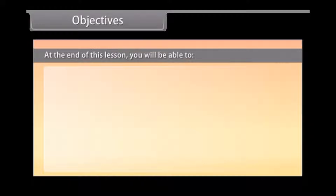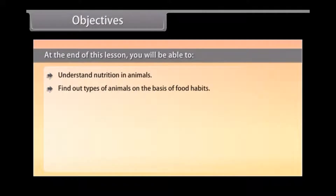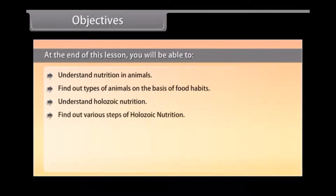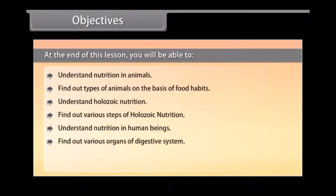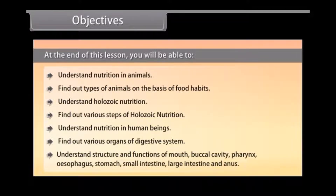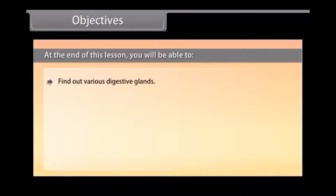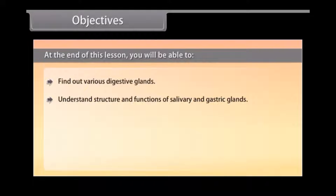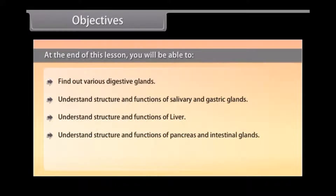At the end of this lesson, you will be able to: understand nutrition in animals; find out types of animals on the basis of food habits; understand holozoic nutrition; find out various steps of holozoic nutrition; understand nutrition in human beings; find out various organs of the digestive system; understand structure and functions of mouth, buccal cavity, pharynx, esophagus, stomach, small intestine, large intestine, and anus; find out various digestive glands; and study chemistry of digestive glands.